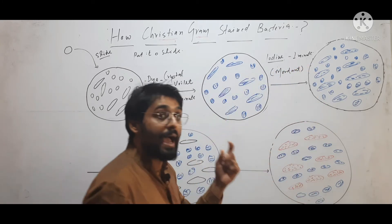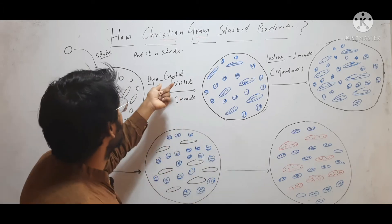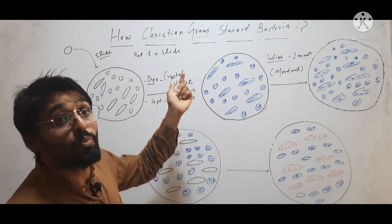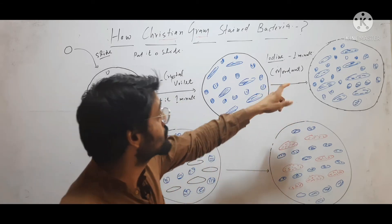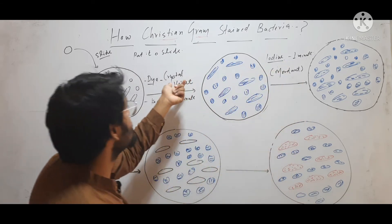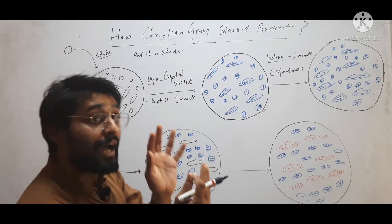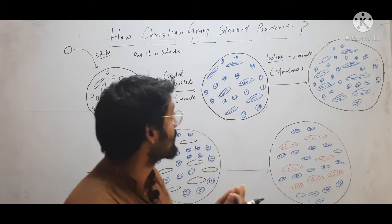This iodine helps the crystal violet to bind the cell wall molecule. That is called mordant. This iodine helps crystal violet in binding with the target molecule of the cell wall.